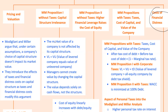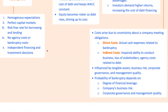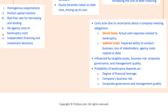While debt has its advantages, there's a dark side: financial distress. This occurs when a company struggles to meet its debt obligations, leading to potential bankruptcy. The costs associated with financial distress can be direct, like legal fees, or indirect, like loss of customers and employees. Lehman Brothers in 2008 is a textbook case — the bank's high leverage led to massive financial distress during the financial crisis, culminating in bankruptcy, the ultimate cost of financial distress.